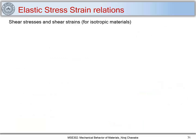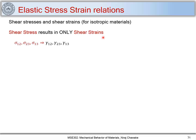We have seen how to relate normal stresses with normal strains using elastic constants. Now we will see shear stresses and shear strains — again for isotropic materials, where elastic properties are not a function of direction. By the principle of superposition, shear stresses produce only shear strains. Let me write the relation between shear stress and shear strains.